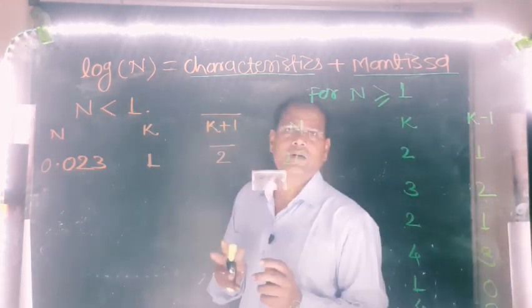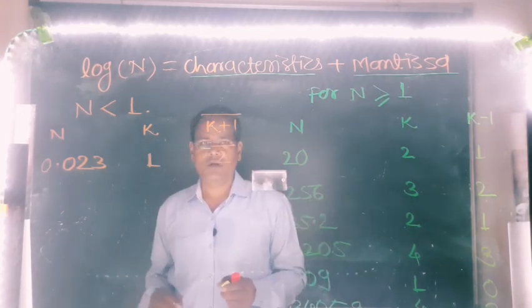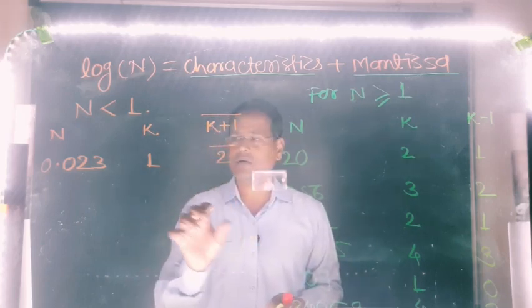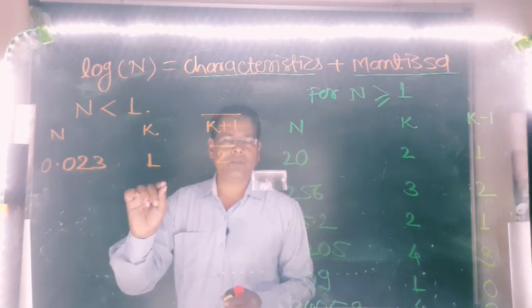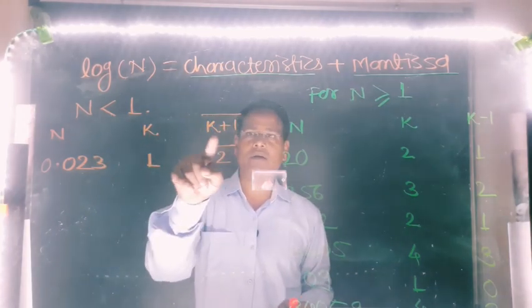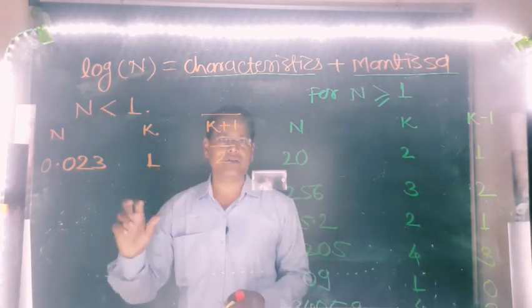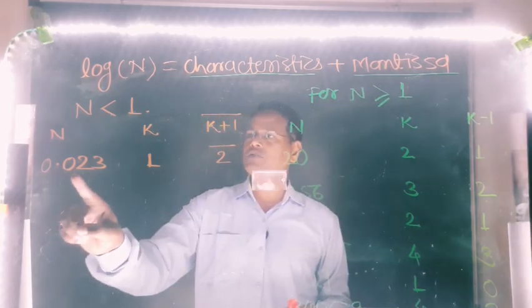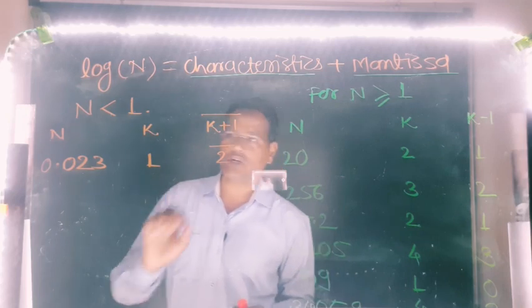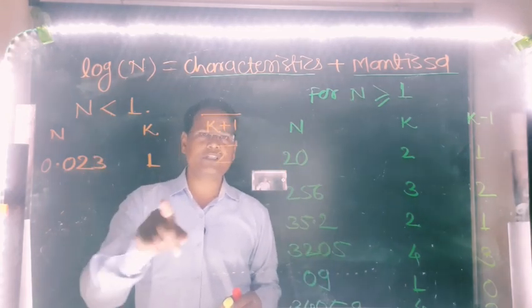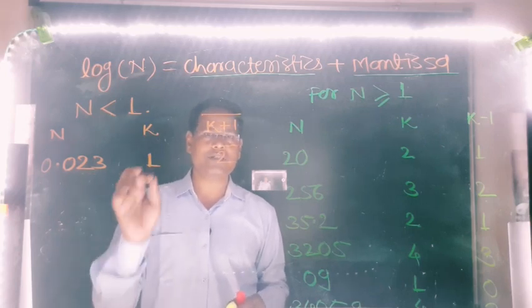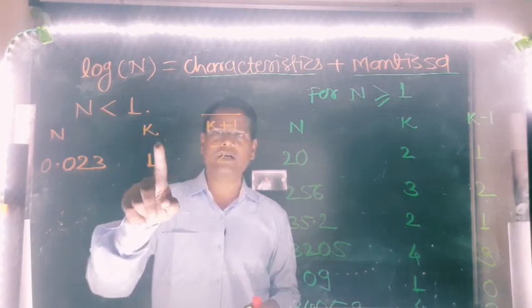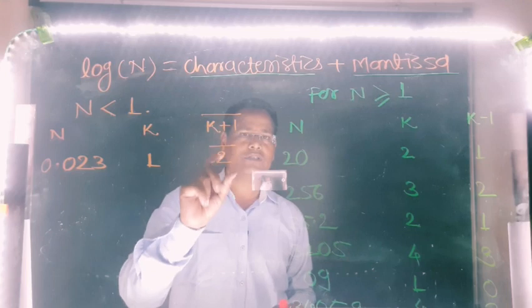How to find the characteristics of a number if it is less than 1? We have to count the number of zeros after the decimal point until any digit from 1 to 9 occurs. Call that number of zeros k, add 1 to k, place a bar on its head, and read that number as 'bar 2' or whatever it may be. For example, 0.023: after the decimal point there is 1 zero before the digit 2 occurs. So number of zeros k equals 1, plus 1 equals 2, characteristics is bar 2.